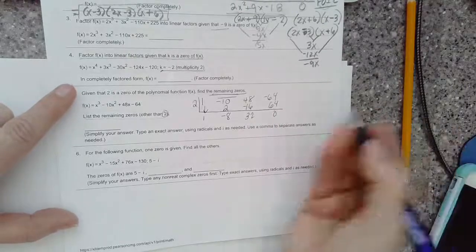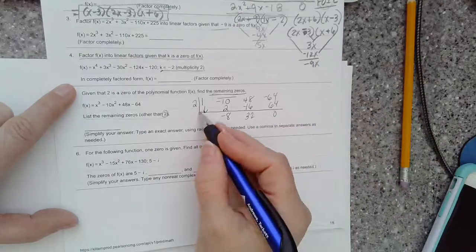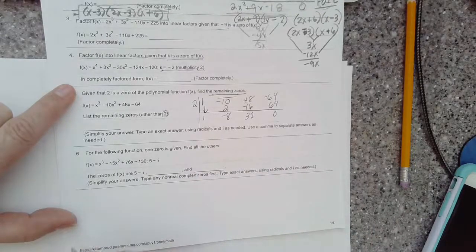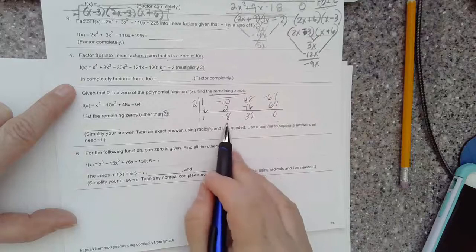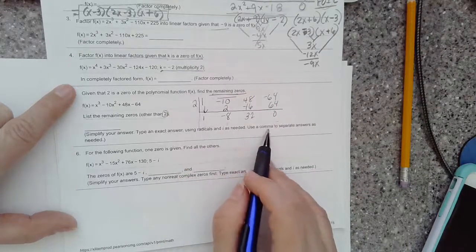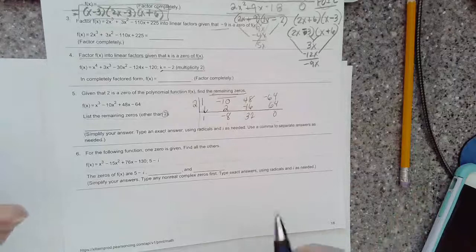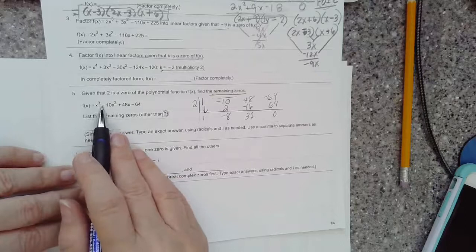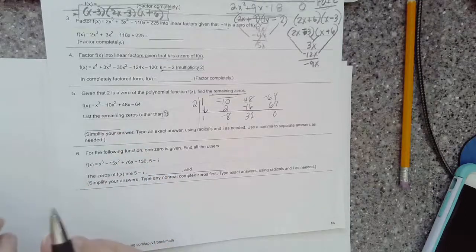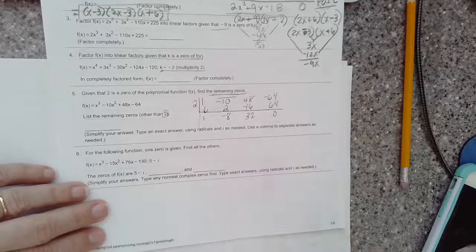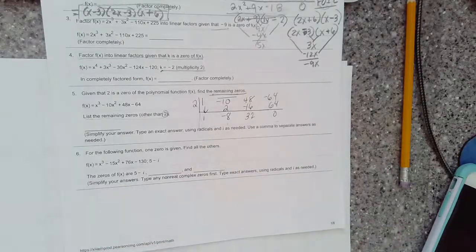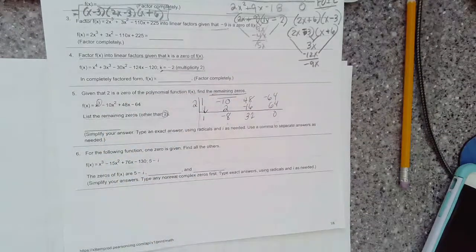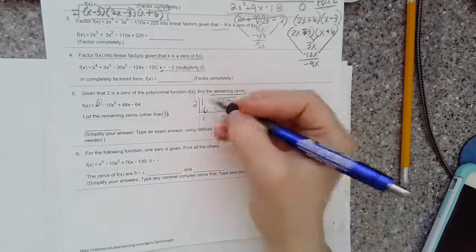I could keep looking for zeros by synthetic division, but this one is not factorable. Synthetic division will only find your rational, nice fraction answers, but it won't find the imaginary answers. So it's third degree, so I'm looking at three total solutions. We've got one of those, that's two. Now let's find the others.